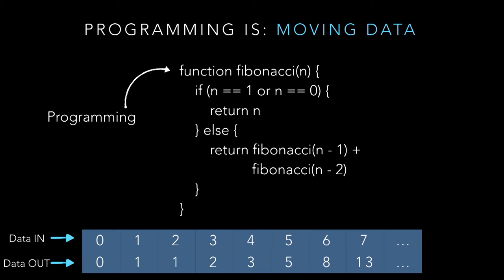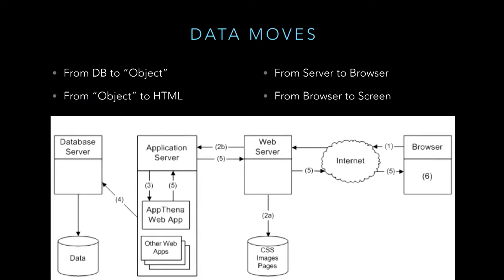Here's an example of something that is very clearly programming. This is a function that is computing the Fibonacci sequence. It's taking in some data — the nth element of the Fibonacci sequence — and it's returning the value of that sequence. Data in, some transformation, data out. At a systems level, we're moving data from major servers to other servers, from components to components, but it's all just data.